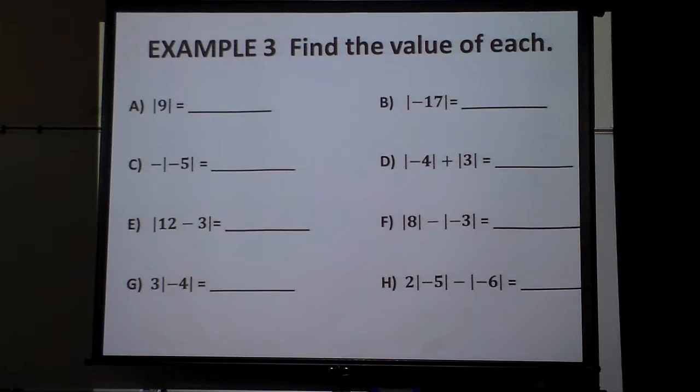So, some samples here. Positive 9 is how far from zero? 9. How far is negative 17 from zero? 17. Notice you just take the number and you make it positive. If it's positive, it stays positive. And if it's negative, you make it positive.